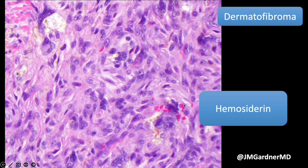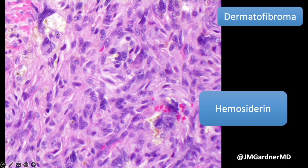When hemosiderin is present with blood-filled spaces, you can call it aneurysmal dermatofibroma. Both hemosiderin and blood-filled spaces are very reassuring findings against DFSP and toward dermatofibroma, because DFSP almost never has hemosiderin or blood-filled spaces. The hemosiderin is often found inside foamy multinucleated cells, with some little speckles of hemosiderin in the foam layer, and you can also see it in hemosiderophages scattered in the background.